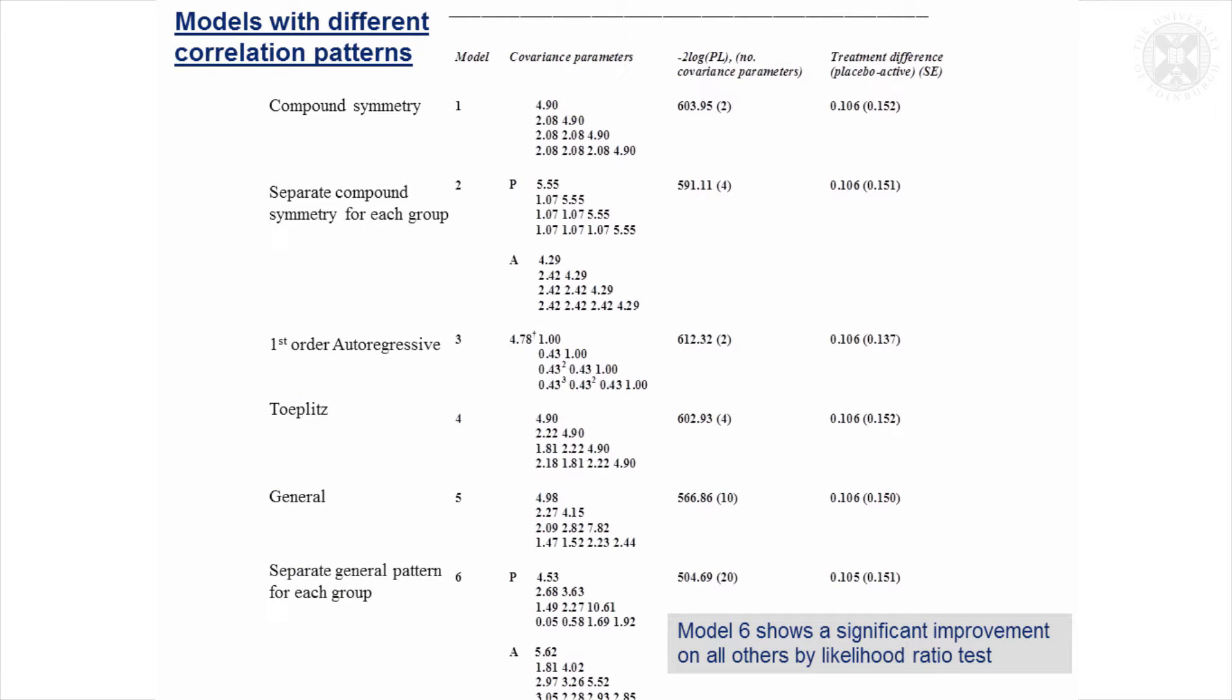This is just a table of some of the different structures that were tried and the covariance patterns that resulted and the minus twice the log likelihood. I won't go through all the different testing that was done to compare the models. But basically, the most complicated model at the bottom, which had a general pattern with a different pair of correlations for each time point and it's separate for the two treatment groups, the placebo and the active treatment, came out significantly better than the other five models. So it was selected as the best model to use.